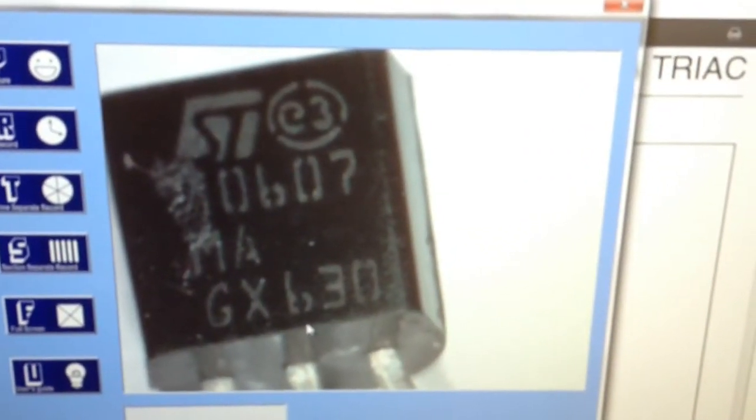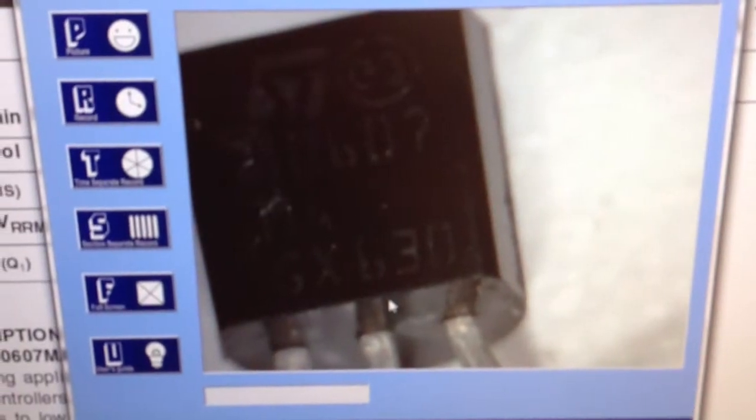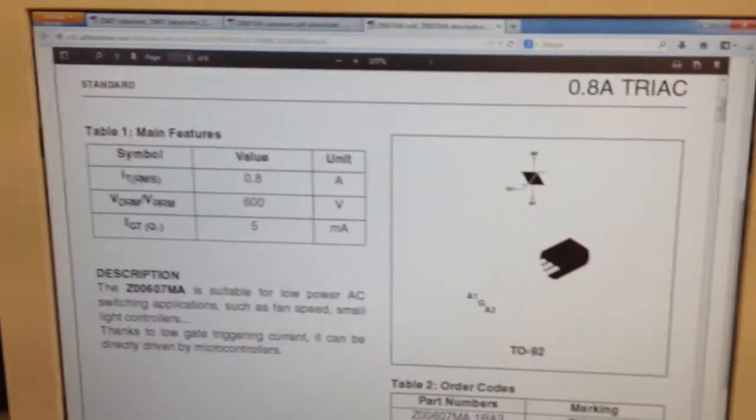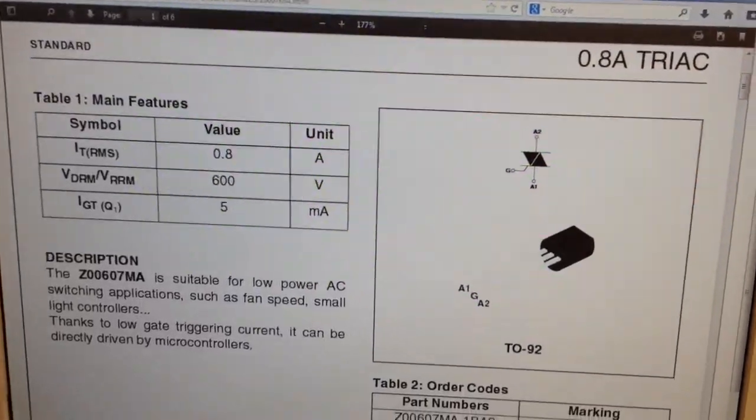It's an ST something 0607, which I've done the research already and found is a 0.8 amp triac, which is exactly what I expected it to be. So I'm going to put the fan back together as it is.